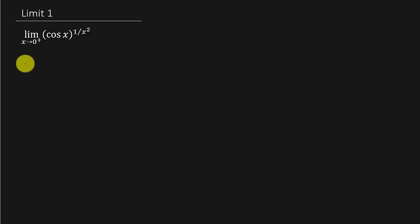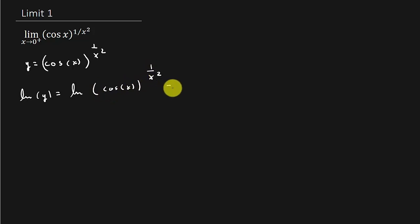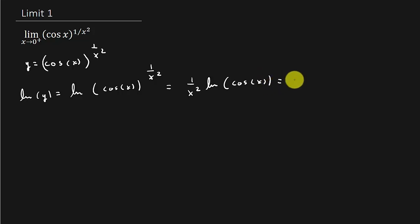What we're going to do is let y equal cosine x raised to the 1 over x squared. Then we take the natural log of both sides. So we get the natural log of y is equal to the natural log of cosine x raised to the 1 over x squared power. We have a property that lets us pull the exponent down in front, and I'm going to write this as natural log of cosine x over x squared — just write it as a fraction.